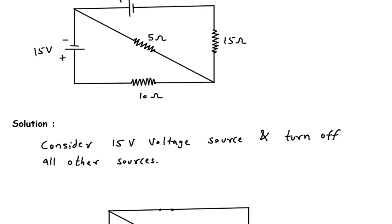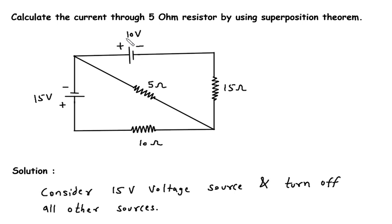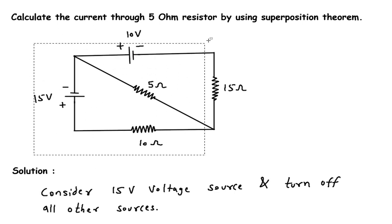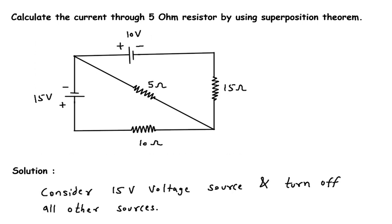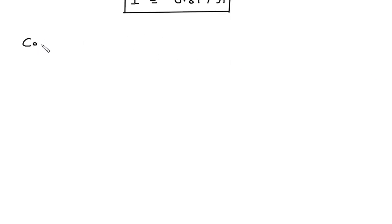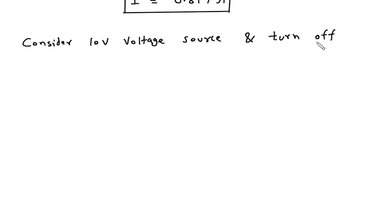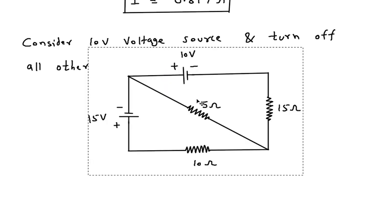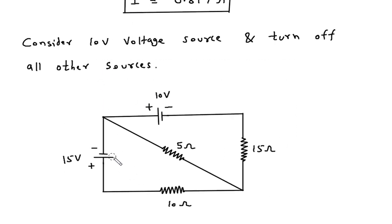Now next we have to find I double prime by considering this 10 volt voltage source and turning off all other sources. Now if we turn off this 15 volt voltage source, it will be a short circuit.